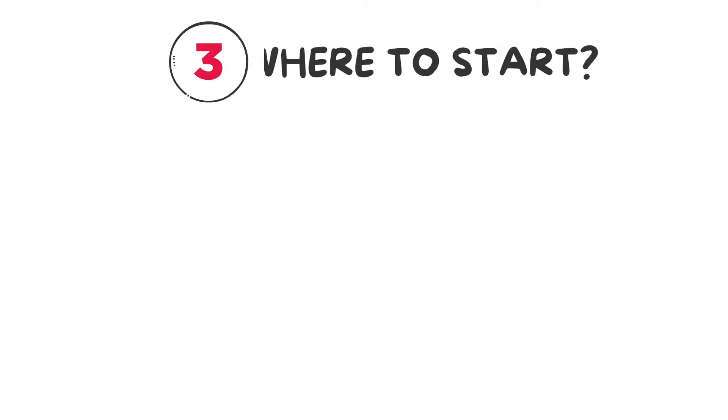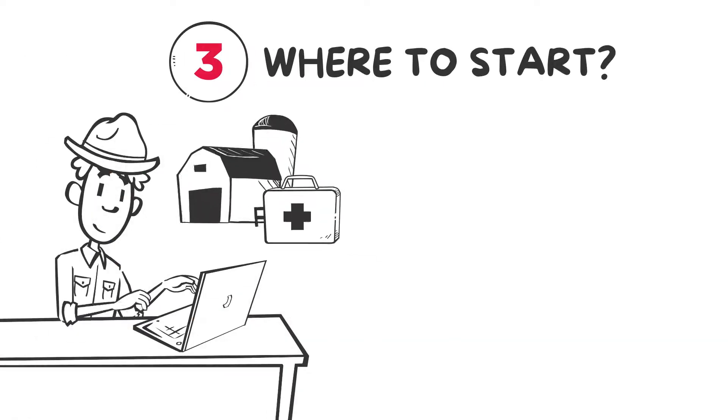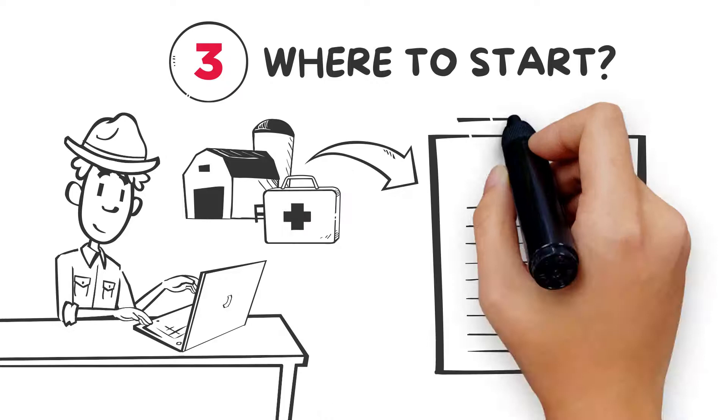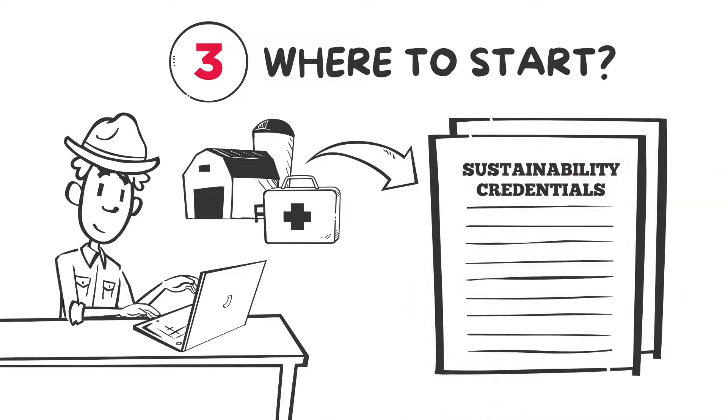To get started, Old MacDonald can do a health check on his farm management. This will help him achieve sustainability credentials if and when he's ready.